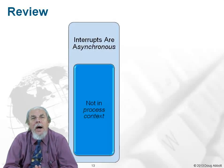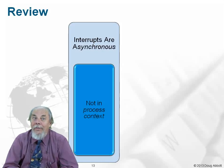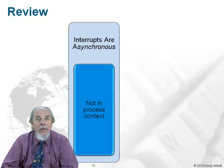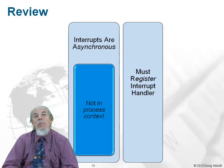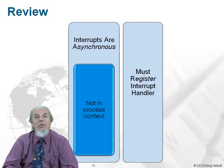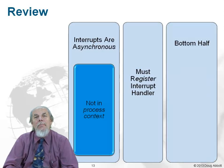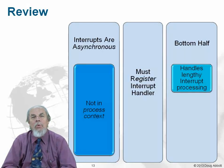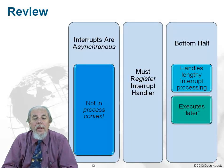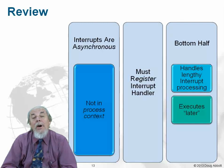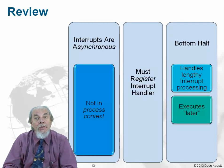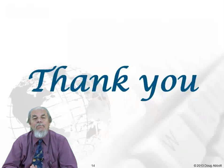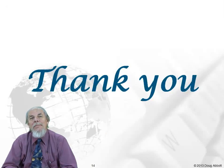Let's review. Fundamentally, interrupts are asynchronous — that's what makes them difficult. Interrupt handling does not occur in process context. Like any other resource in the system, we have to register an interrupt handler before we can use it. The bottom half is a mechanism for handling lengthy interrupt processing while allowing the interrupt source itself to be re-enabled. The bottom half executes some time later, more or less at the kernel's convenience. There are two bottom half mechanisms in Linux: the tasklet and the work queue. That's it for this time — thanks for joining me. See you next time.